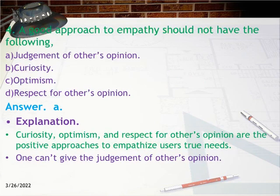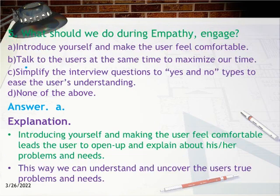Question 4: A good approach to empathy should not have the following: A) judgment of others' opinions, B) curiosity, C) optimism, D) respect for others' opinions. Answer A. Explanation: Curiosity, optimism, and respect for others' opinions are positive approaches to empathizing with users' true needs. One should not give judgment of others' opinions.